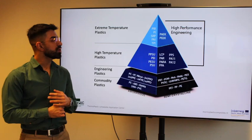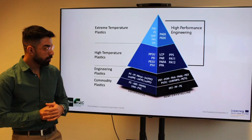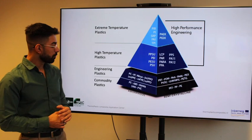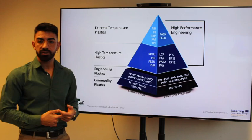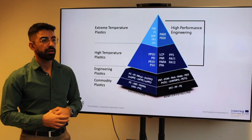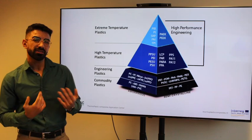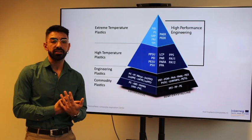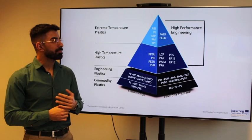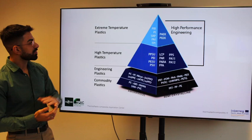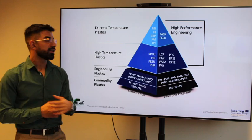The general classification of thermoplastic polymers can be divided into amorphous and semi-crystalline. At the bottom of the pyramid, we see the commodity thermoplastics — like polypropylene, polyethylene, and polyethylene terephthalate — which are the most commonly used plastics. Above that are the engineering thermoplastics, such as polycarbonate or ultra-high molecular weight polyethylene, with better mechanical and thermal properties. Higher still are the high-performance engineering thermoplastics, subdivided into high-temperature and extreme-temperature plastics according to processing temperatures — typical names include PPS and PEEK.